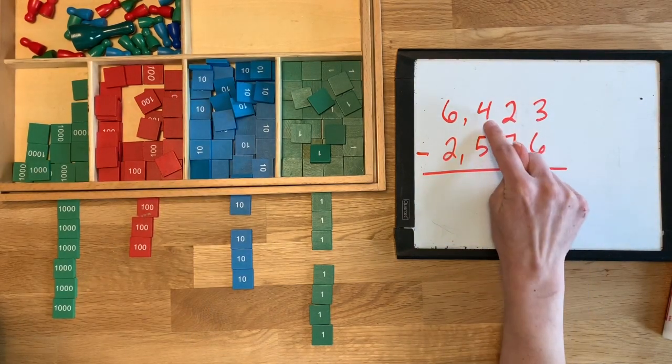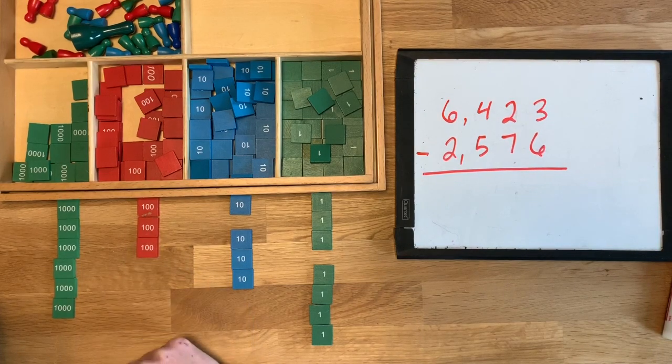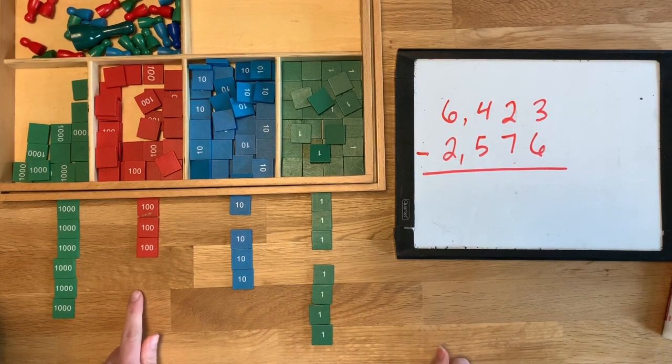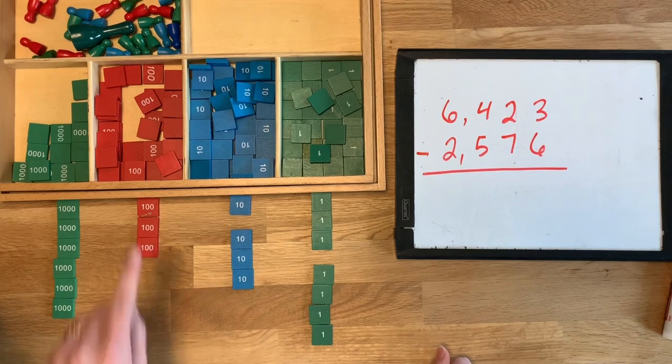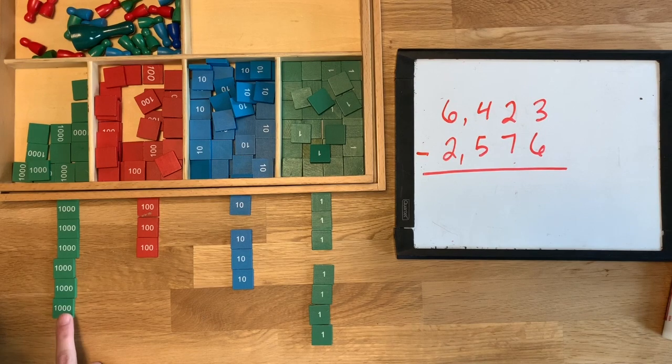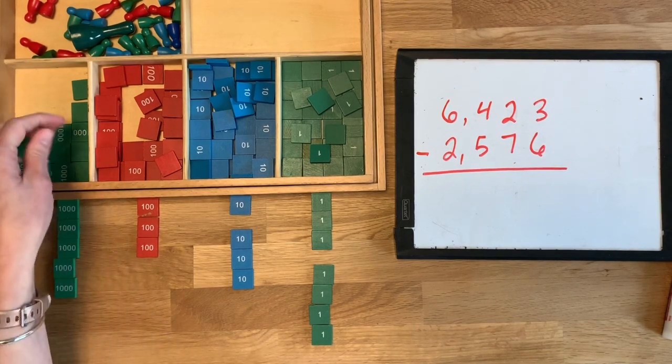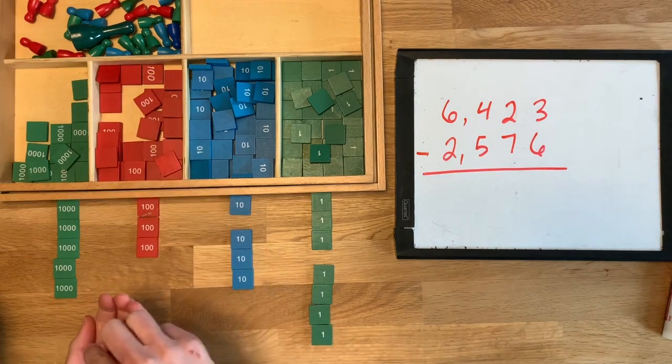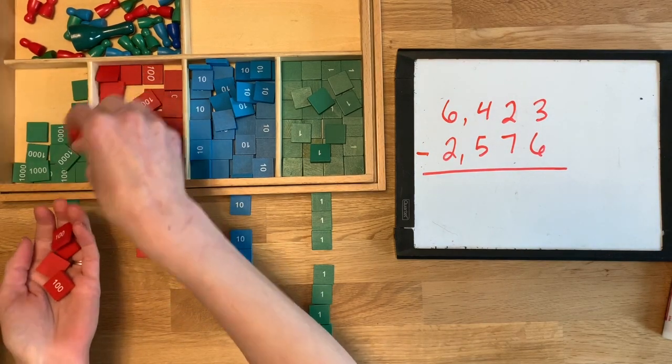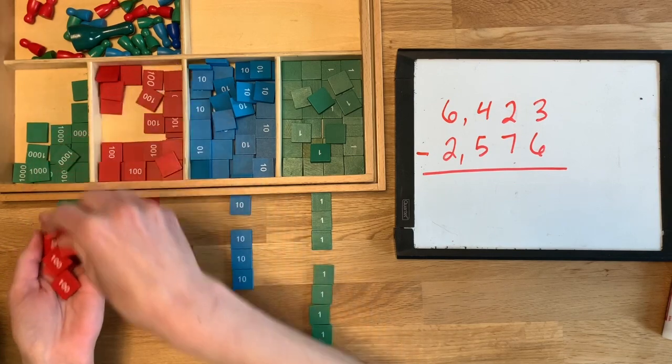Now we need to take five from four. But wait, there's only three. Why is there only three over here? Because we borrowed from the neighbor to give to the tens. So we only have three now. So five from three, we can't do that. So we're going to borrow from our neighbor on the left. How many hundreds makes a thousand? Ten. One, two, three, four, five, six, seven, eight, nine, ten.